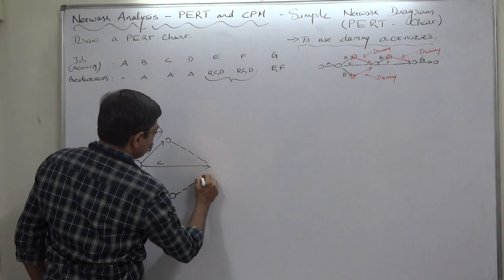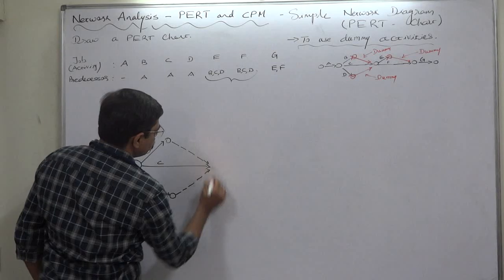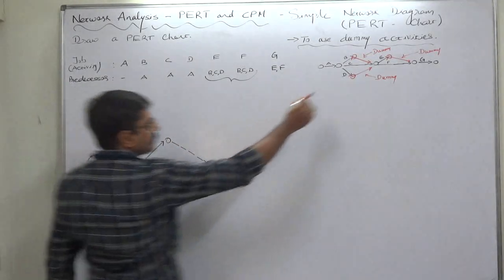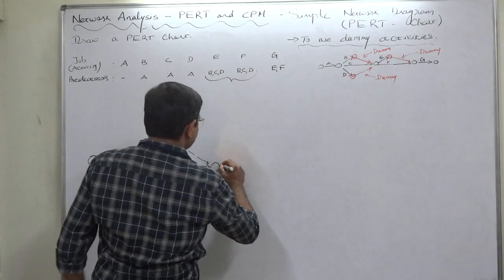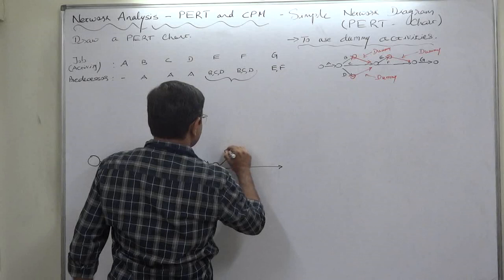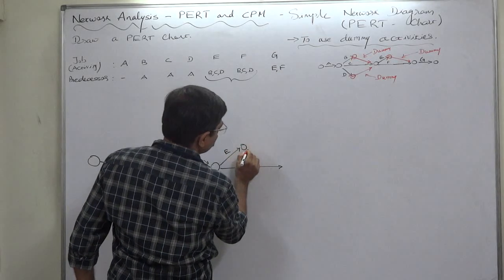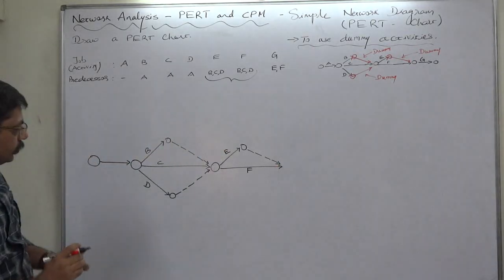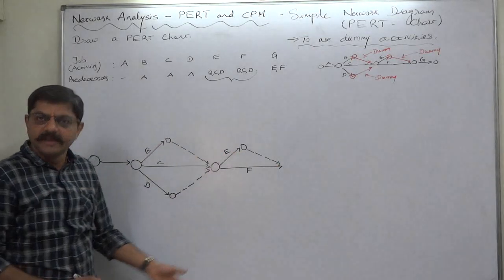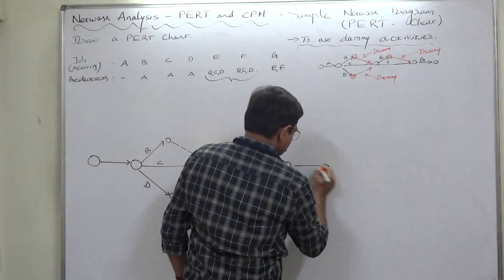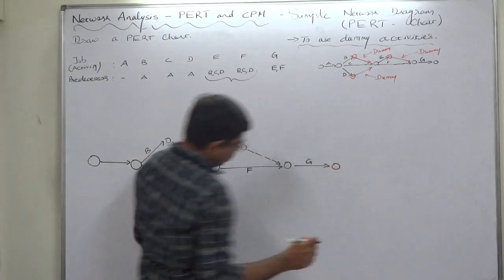To show the common predecessors of E and F, again now we are very much clear that we are going to use dummy. We need to use dummy. This is E, this is F. You can also use another color to show the dummy activity. It is upon you.